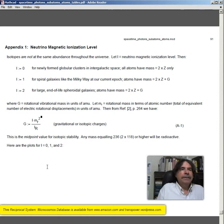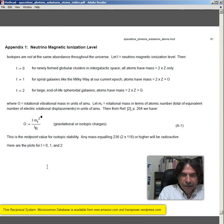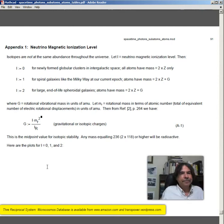62 references in this paper. Now, Appendix 1. Neutrino-magnetic ionization level. Isotopes are not at the same abundance throughout the universe, despite what conventional theory says. Let I equal neutrino-magnetic ionization level.